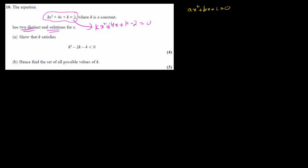The coefficient of x squared is called a, so here that is k. The coefficient of x is called b, so here that is 4. And the one that has no variable x at all - the constant - that is k minus 2, which is c. When we find the unknown value of x, that is known as the root or solution of the quadratic equation.